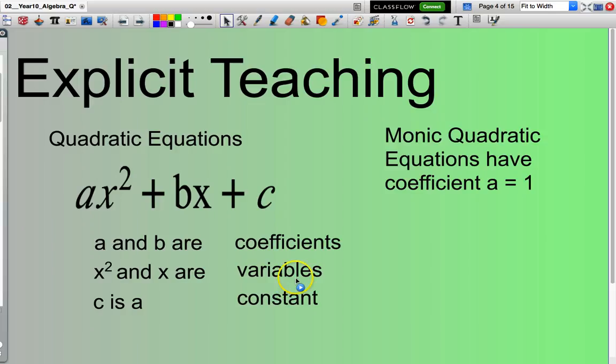Now monic quadratic equations have the value of the coefficient a set to one. So typical examples of monic quadratic equations are x squared plus 5x plus 6, x squared minus 6x plus 9, etc.